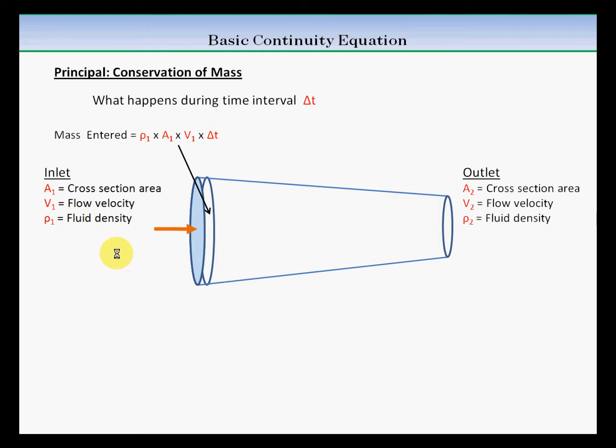We can do the same thing at the outlet. Knowing that the cross section at the outlet is a2 and velocity of exit is v2, we can create a similar equation, which will be density times area times velocity times the time interval.